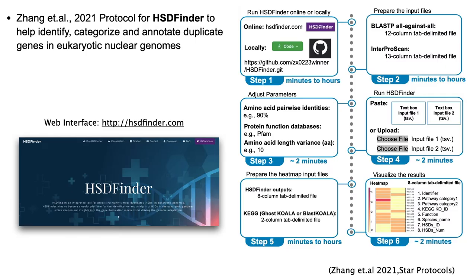For example, here is the middle step work for the bioinformatic tool HSDFinder. It is designed for identifying HSDs in eukaryotic genomes by using the BLAST package, PF domain, and KEGG pathway. We highlighted the steps in a graphical abstract and assisted with examples, which greatly cut down the barrier for first-time users to use this tool.